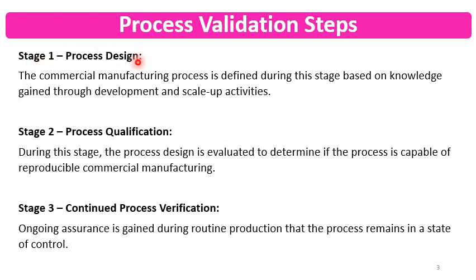First is Process Design. The commercial manufacturing process is defined during this stage based on knowledge gained through development and scale-up activities. Research data, scale-up data, and accumulated experience are all available, and the commercial manufacturing process is defined through the Process Design stage of Process Validation.